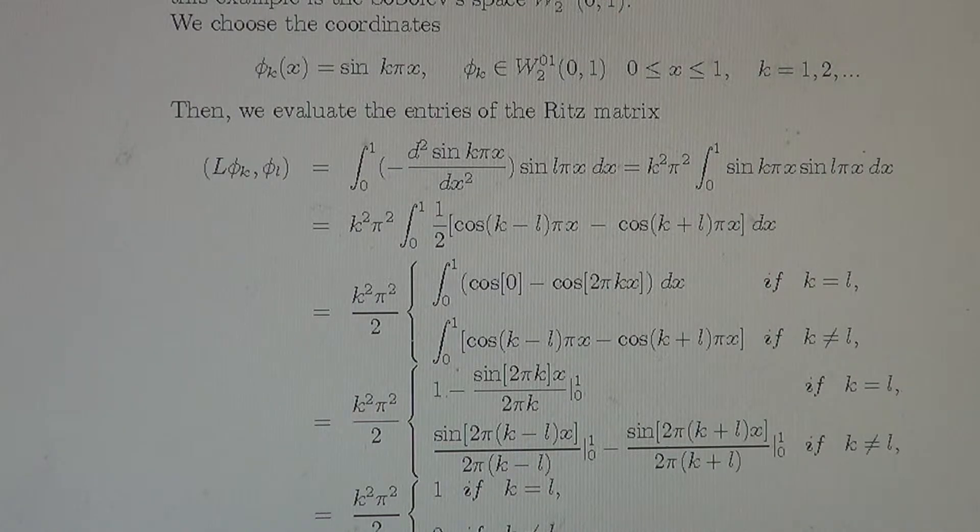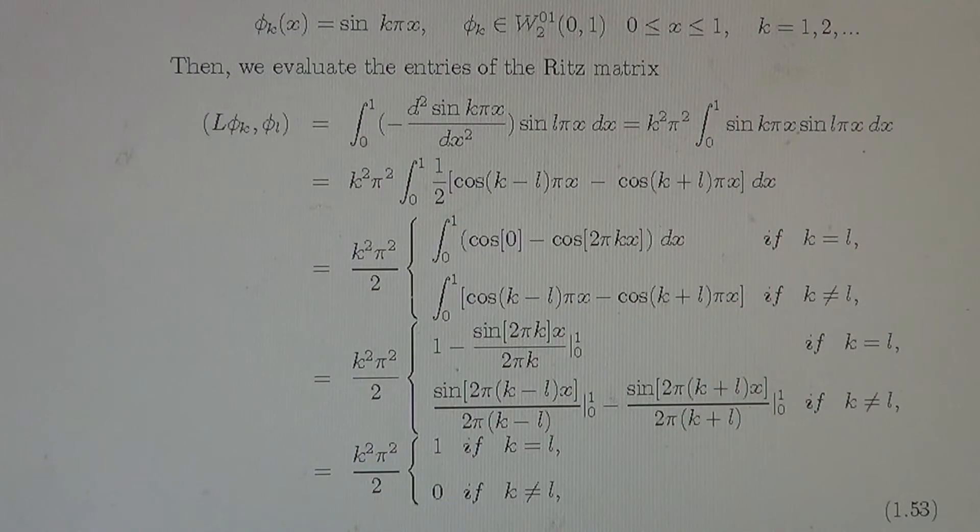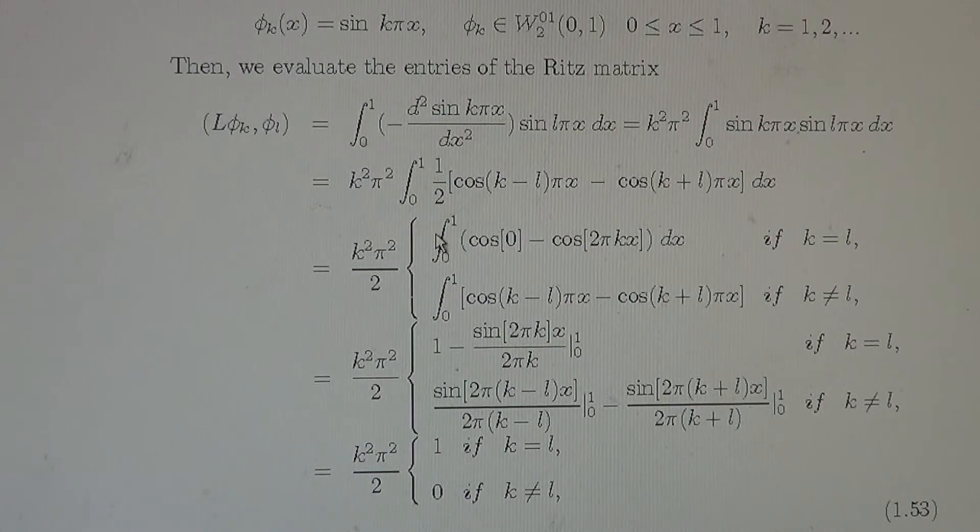So this product of sine we can replace by the trigonometric identity, which is half cosine of the difference k minus L pi x minus cosine of the sum k pi plus L pi x. Then we can consider now the integral in the case where k equals L, then this cosine will be 0. This will remain with 2 pi k x, and for the difference it remains as it is,